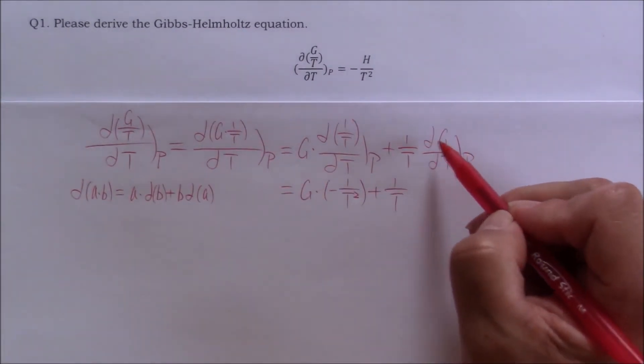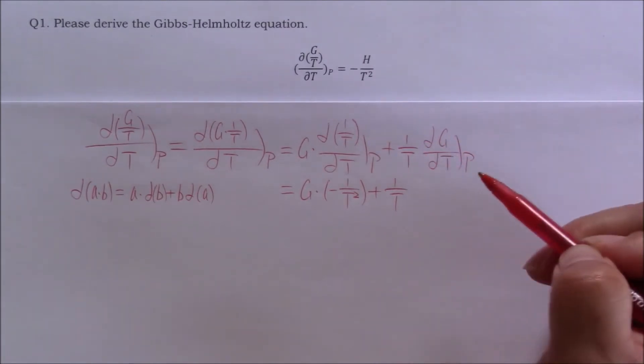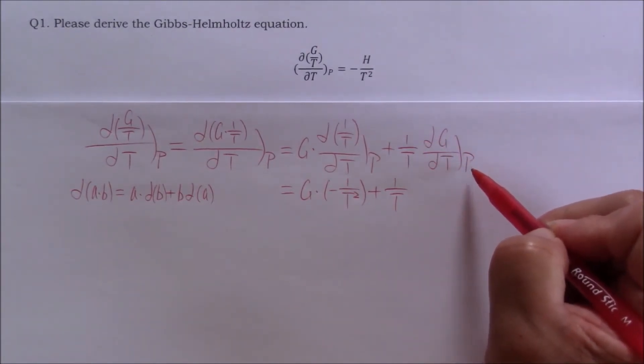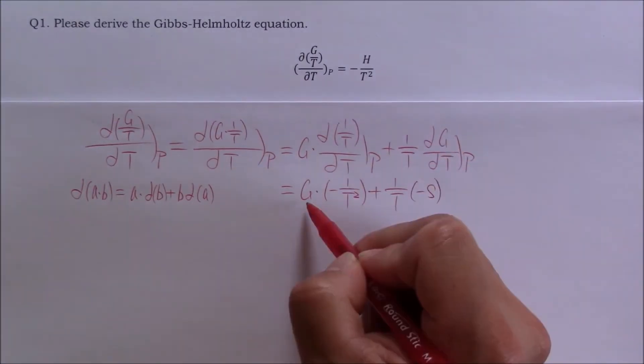The partial derivative g partial T at constant p is equal to negative entropy, negative s. g is defined as h minus TS.